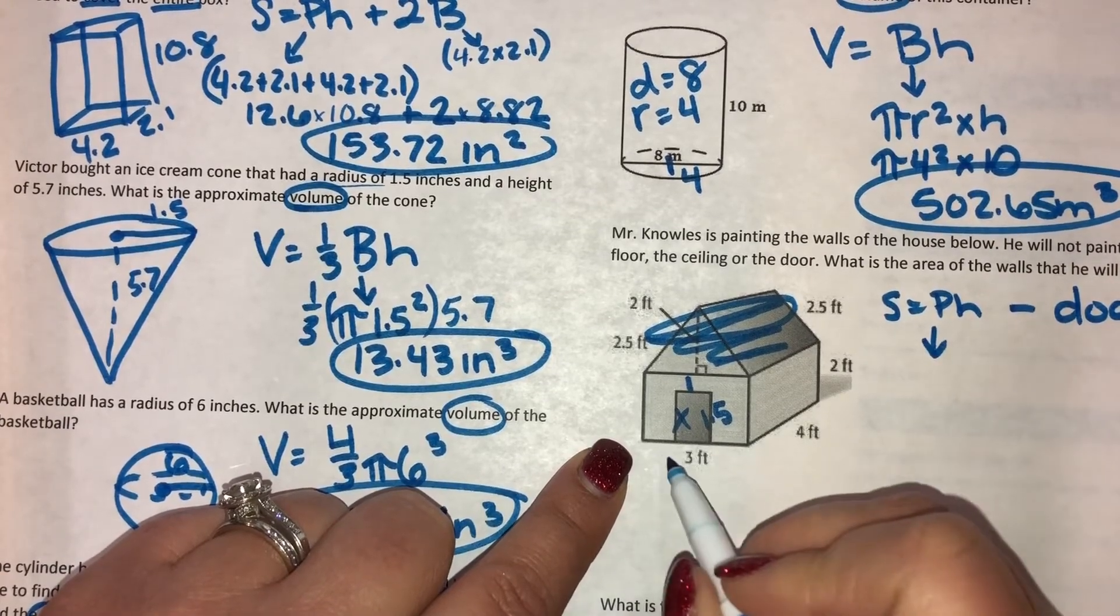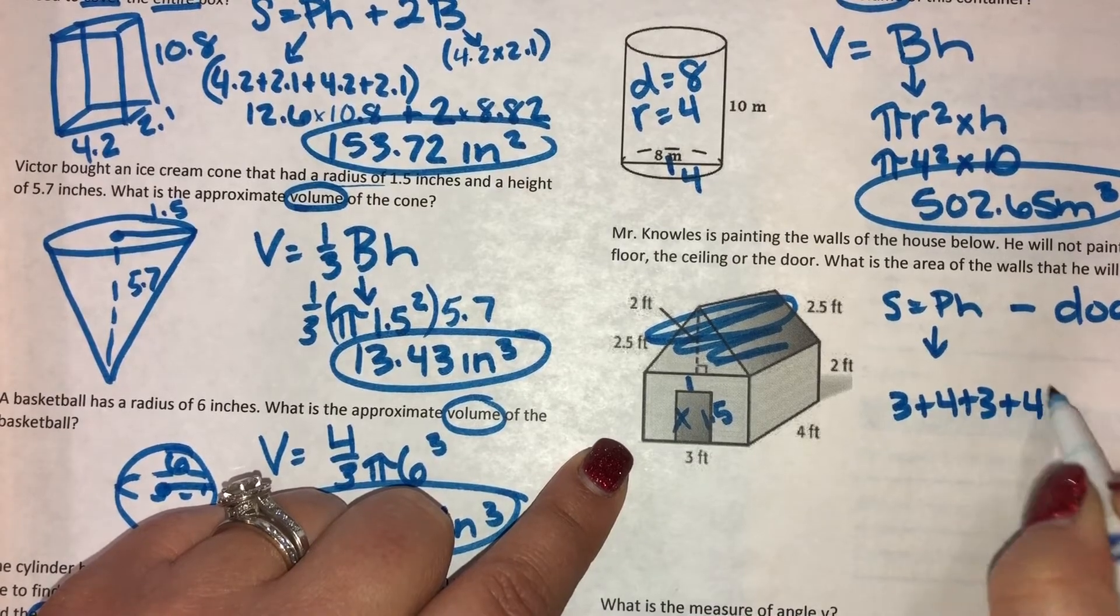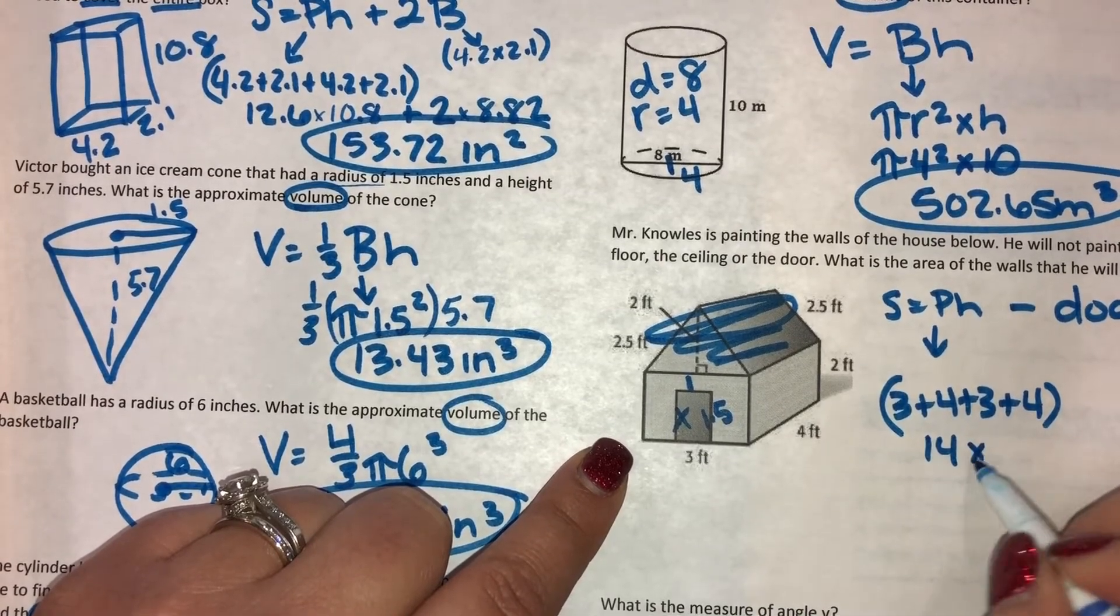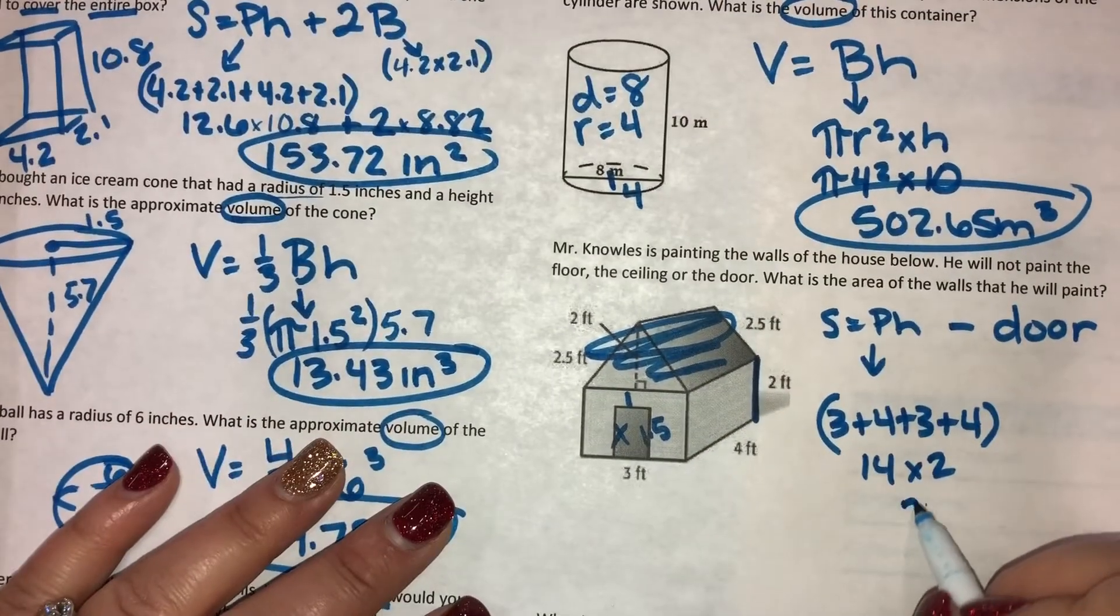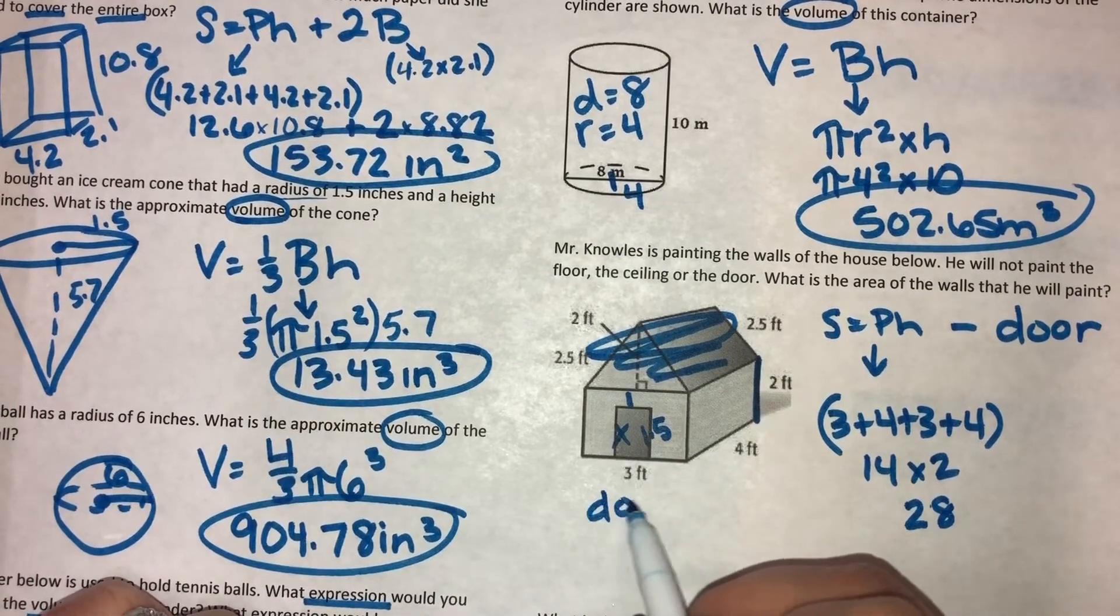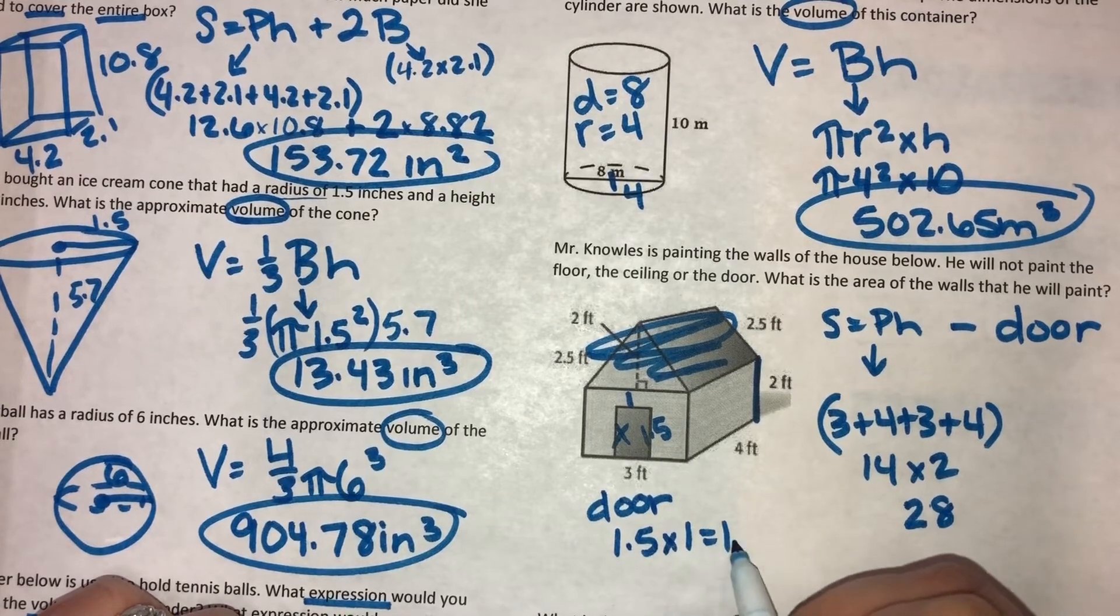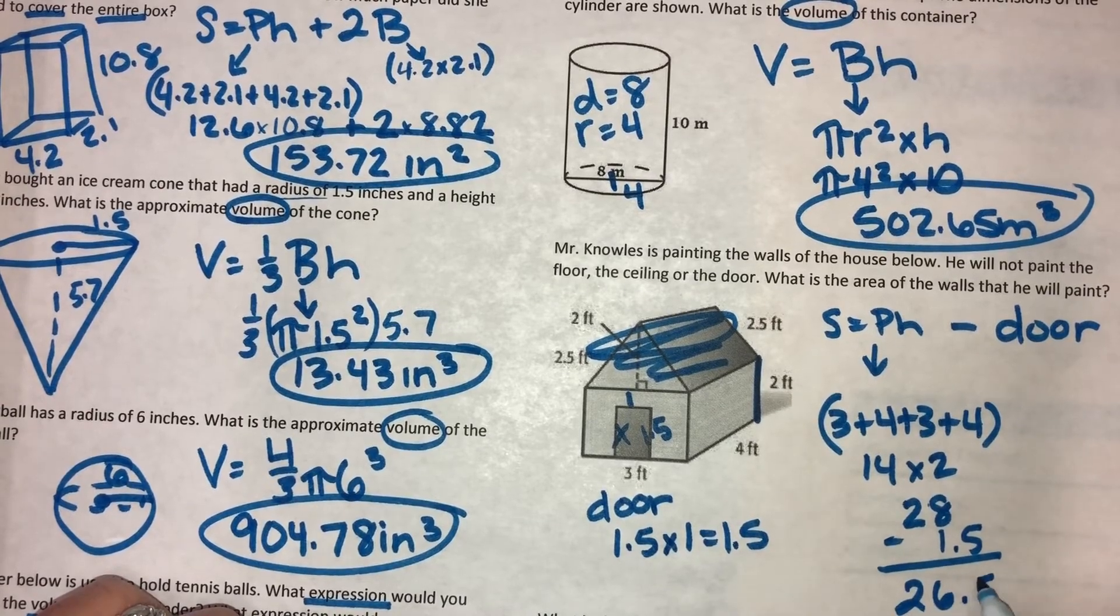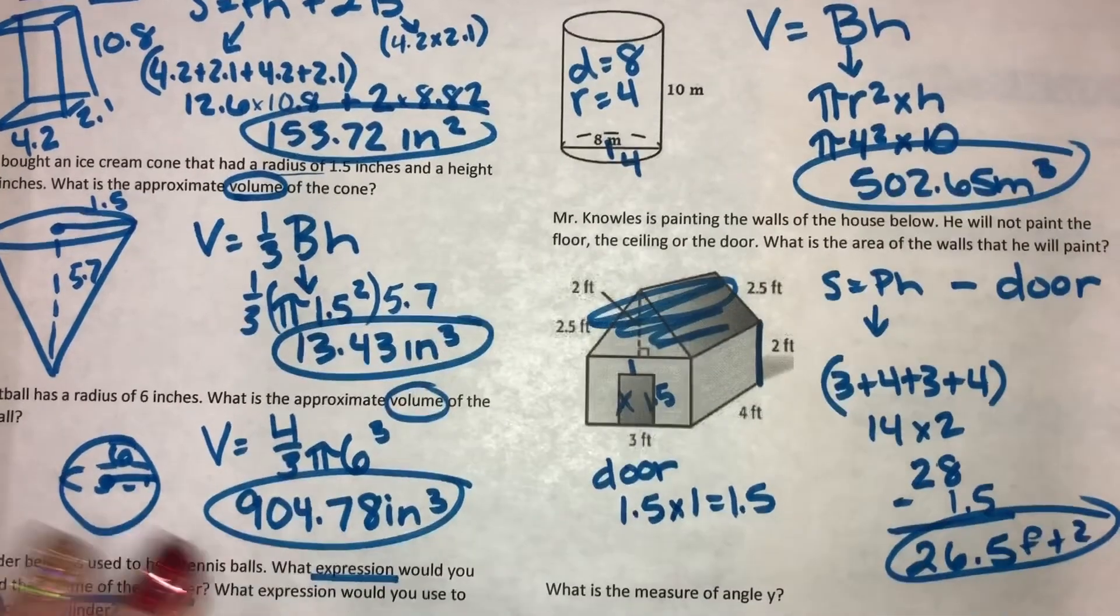So P, perimeter of the base: 3 plus 4 plus 3 plus 4 will give you the perimeter of the base, which is 14, and then times the height of the shape, so that's 2. And so that would give you 28 for the total, but then you have to find the area of the door. So the door would be length times width, 1.5 times 1, which equals 1.5. And when you take that away, you end up with 26.5 feet squared. So that would be the total that he would paint.